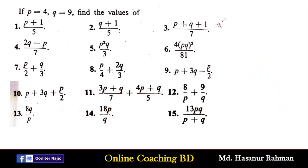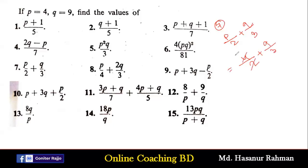Now number 7 says p/2 + q/3. The value of p is 4, so 4 by 2 plus the value of q is 9, so 9 by 3. We divide 4 by 2 to get 2, and 9 by 3 is 3. So 2 plus 3 equals 5.